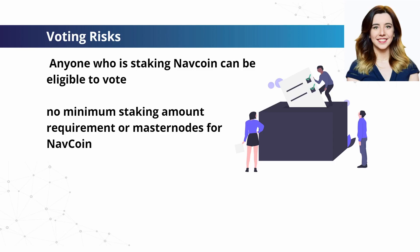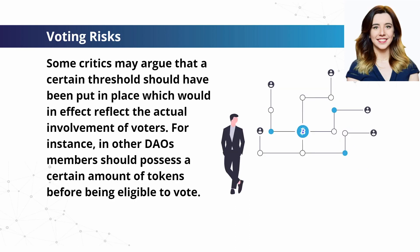For voting risks, within the Navcoin DAO system, there is no limitation as to who can vote on different proposals. Anyone who is staking Navcoin can be eligible to vote. When a block is staked, the staker will cast a vote. Therefore, there is no minimum staking amount requirement or masternodes for Navcoin. In essence, you stake, you vote. While at first glance this can be considered fair play, some critics may argue that a certain threshold should have been put in place, which would in effect reflect the actual involvement of voters.